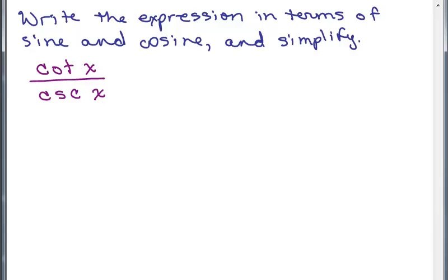We could use the reciprocal identities. We want to write these in terms of sine and cosine. So the cotangent is the same thing as the cosine of x over the sine of x.